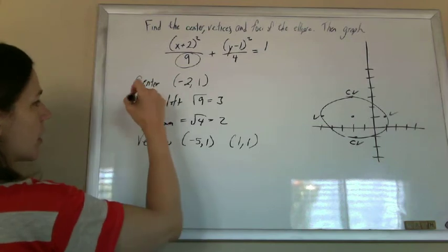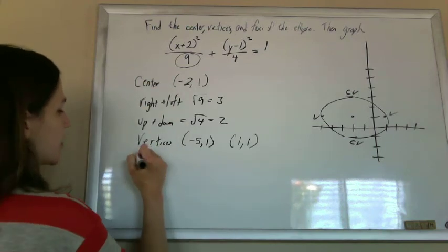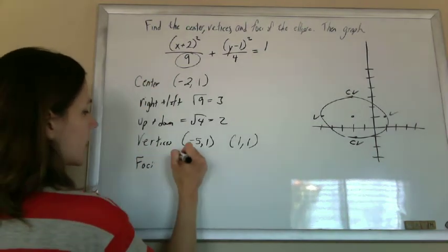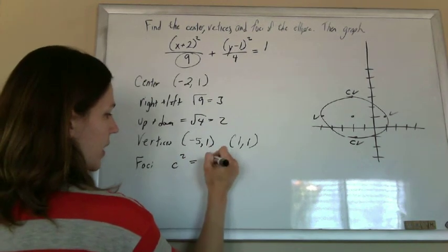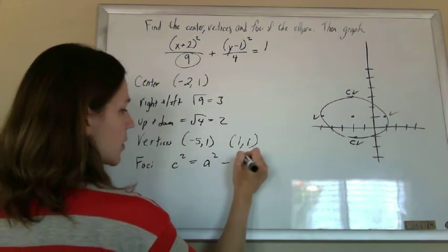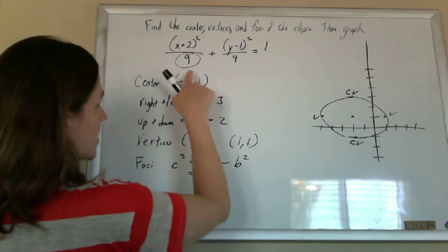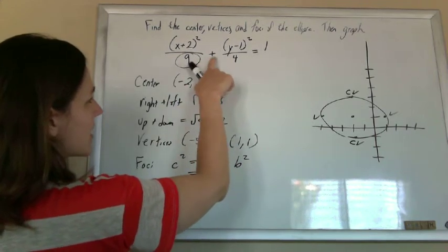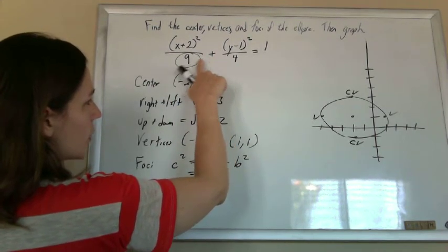So I've got center, I've got vertices. Now I just need these foci. And for ellipses, they get this funky Pythagorean theorem, c squared equals a squared minus b squared. So you take these numbers under here, and it looks like you're supposed to add them, but no, you subtract them.